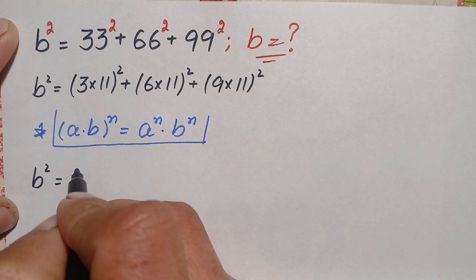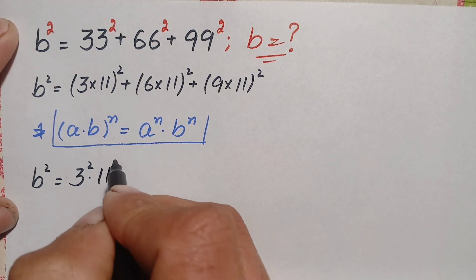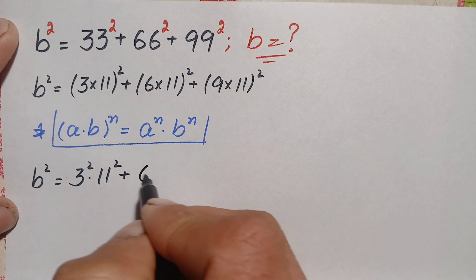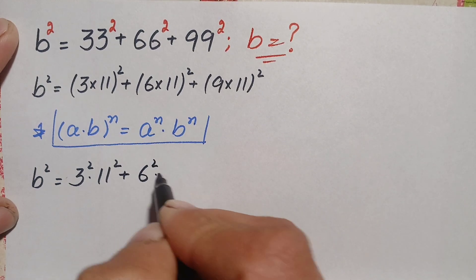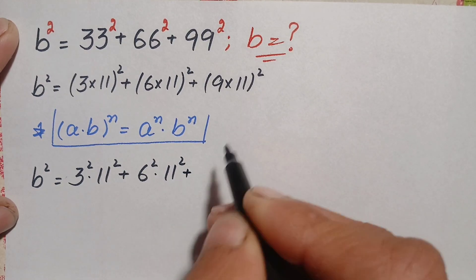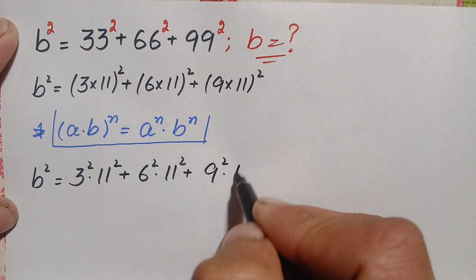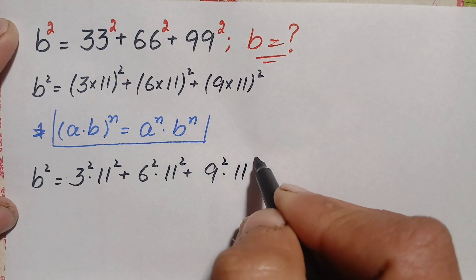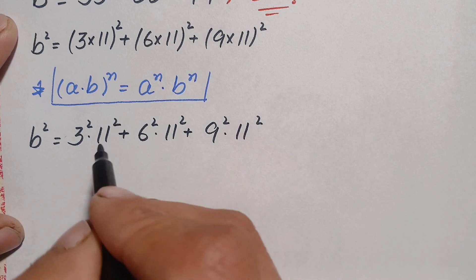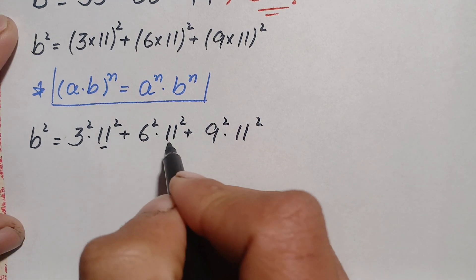Applying the identity term by term: the first term becomes 3² × 11², the second becomes 6² × 11², and the third becomes 9² × 11². Notice that 11² is common in all three terms on the right-hand side.